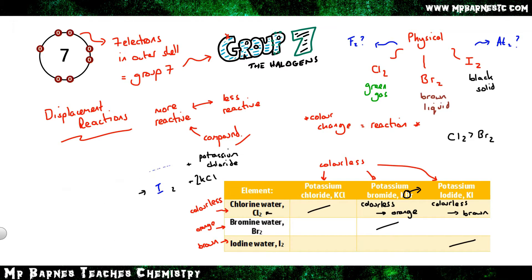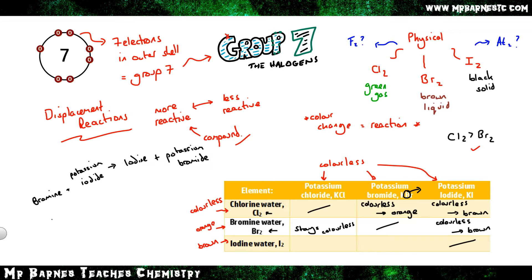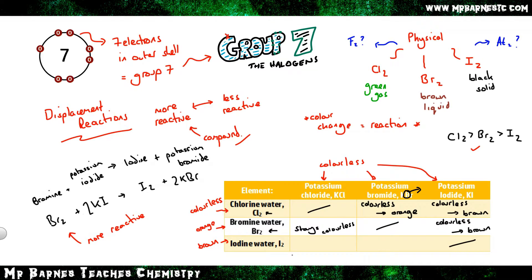When bromine water (orange) is added to colourless potassium chloride, the solution stays colourless, proving bromine is less reactive than chlorine. But bromine added to potassium iodide gives a colour change to brown, so bromine is more reactive than iodine: bromine + potassium iodide → iodine + potassium bromide. Adding iodine to potassium chloride or potassium bromide gives no colour change, confirming iodine is least reactive. Reactivity decreases as you go down group 7.